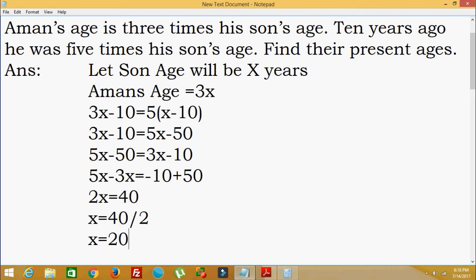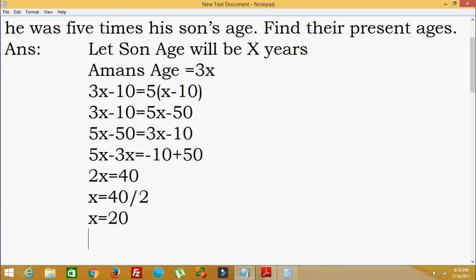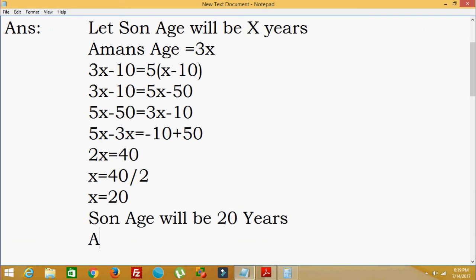So now the son's age will be 20 years because x value is 20. And Aman's age will be 3 times x, that is 3 into 20 which is equal to 60 years. So this is the answer.